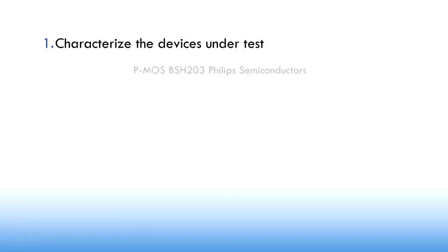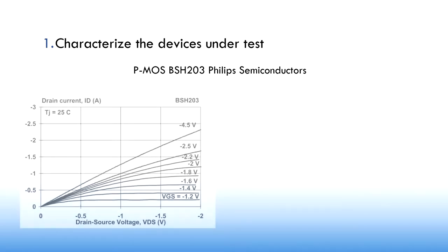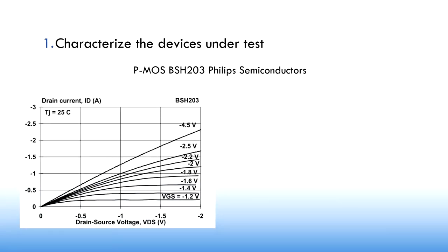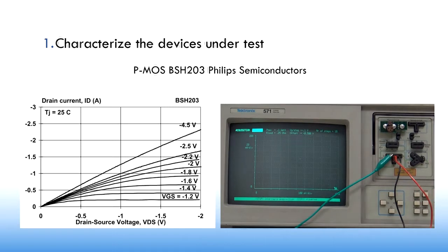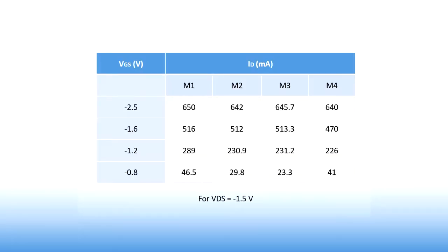We have our EPA, so we can start measuring the characteristics of the devices under test. In our case, a PMOS BSH203 from Philips Semiconductors, whose IV characteristic is shown here. On the left there is the one taken from the datasheet, and on the right the one measured with a curve tracer for M1. This measurement is repeatable in all cases. We have also measured the drain current for the same drain-source voltage and different gate-source voltages, obtaining the values shown in the table. Those values coincide with the ones in the datasheet characteristic.